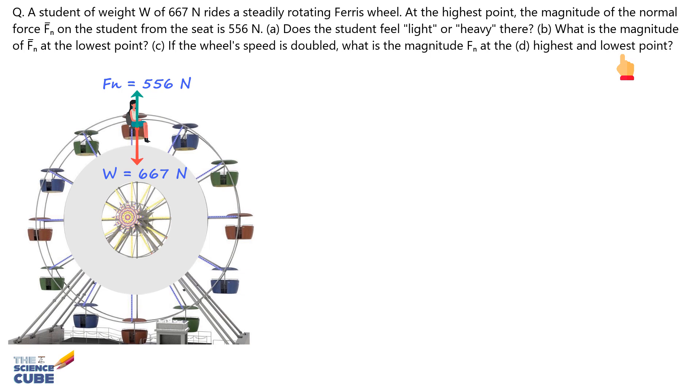In part A, at the highest point of the Ferris wheel, the normal force Fn is 556 Newtons, which is less than the student's weight W of 667 Newtons. This means the force exerted by the seat against the student is reduced, so the student will feel lighter.